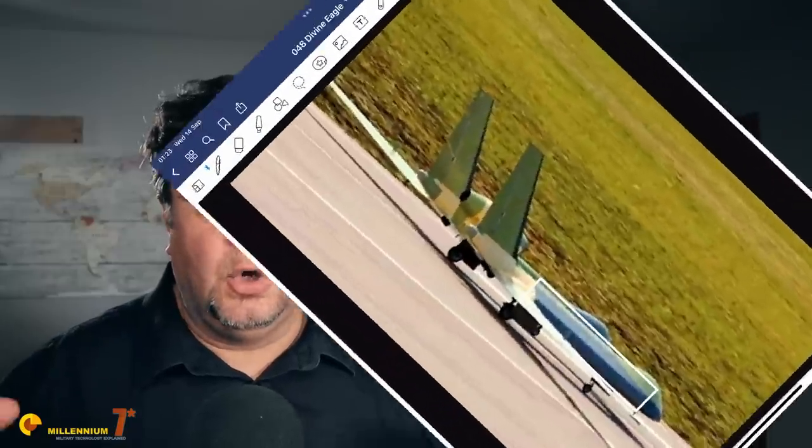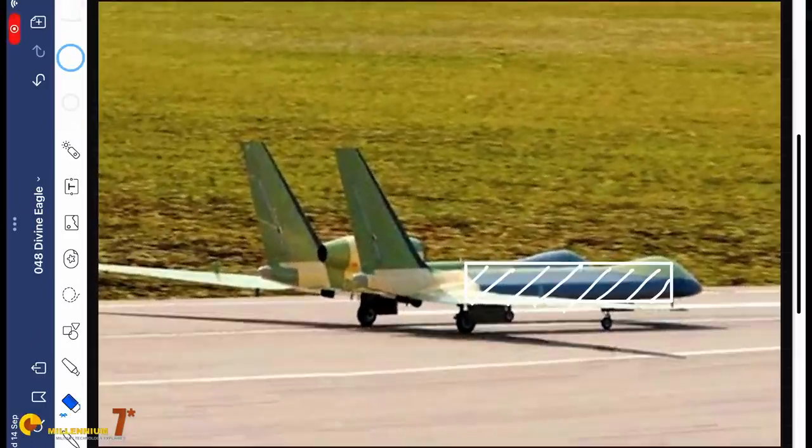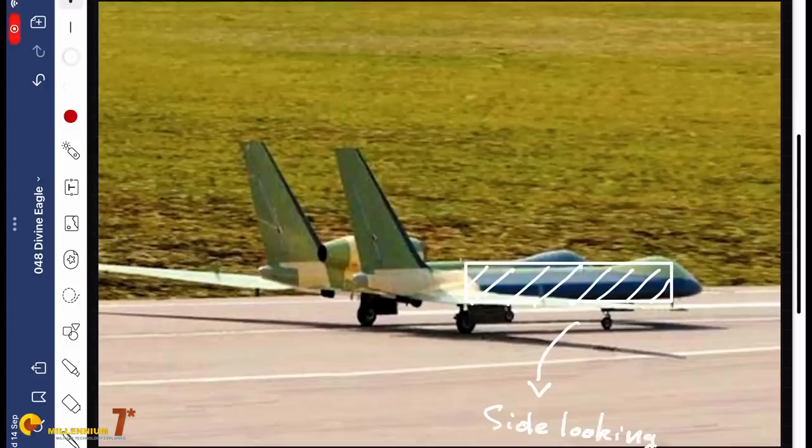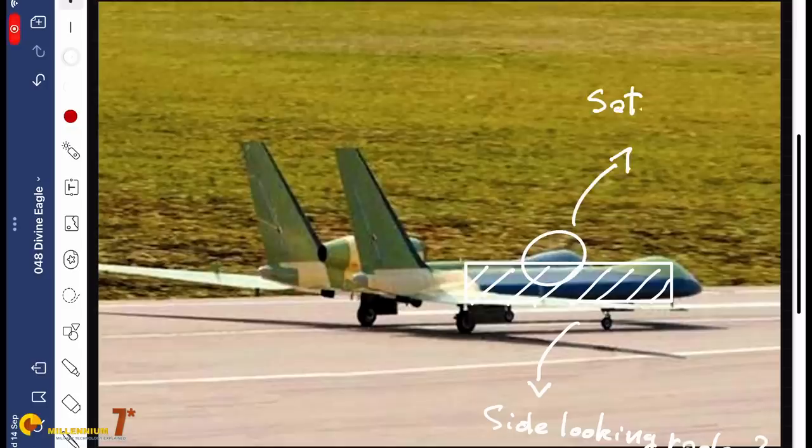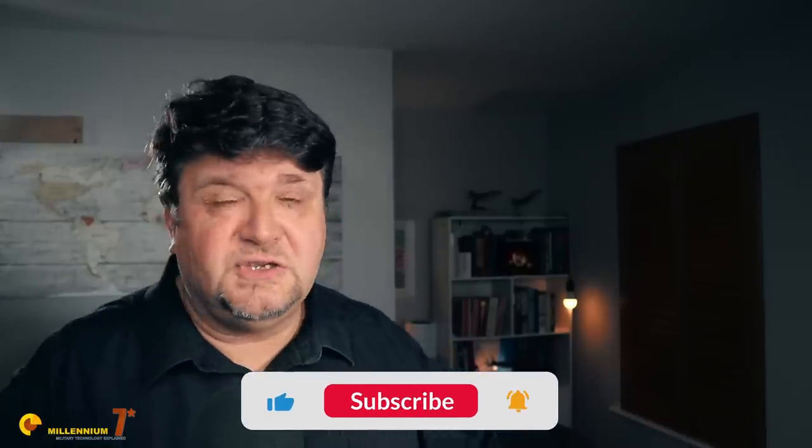So what I believe the Chinese designers did was to create an unimpeded fuselage side where to host the big radar antenna. And then they split the fuselage in two to have less interference and better thermal management. Of course, if you are transforming an already existing civilian aircraft or a transport aircraft, all these issues can be solved. They have been many times.